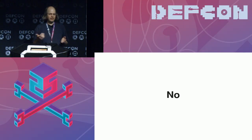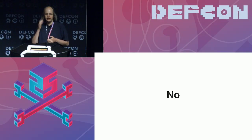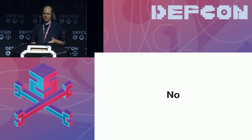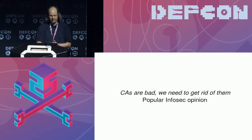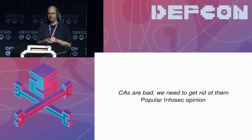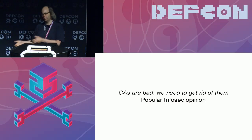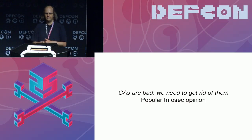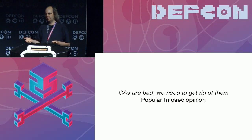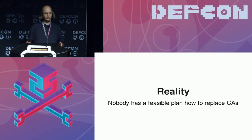Something I hear very often, especially in the IT security community, is that people say this whole system is broken — we need to get rid of it and replace it with something else. The problem, however, is that in reality nobody really has a plan for what to replace certificate authorities with, or at least not any plan that is realistically feasible. So what has been happening is people have thought: how can we improve and make the existing system more secure?